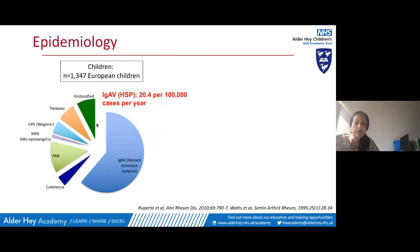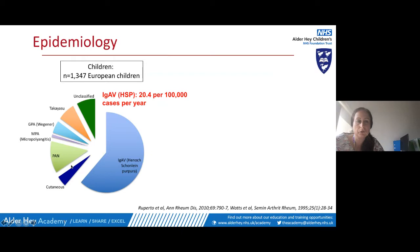Looking at different types of vasculitis, in children HSP is by far the most common type, whereas other types of vasculitis are much rarer in children. This is in stark contrast to adult vasculitis, where adult HSP is relatively small compared to other types. The majority of cases of IgA vasculitis present in children — about 70 percent of all cases present in childhood and only about 20 to 30 percent present in adults.